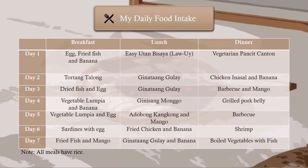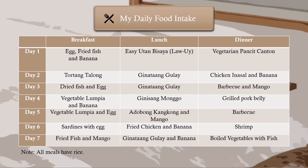My daily food intake: Day 1 — breakfast: egg, fried fish, and banana; lunch: Isiutan Bisaya or laoy; dinner: vegetarian Pasit. Day 2 — breakfast: tortang talong; lunch: ginataang gulay; dinner: chicken inasal and banana. Day 3 — breakfast: dried fish and egg; lunch: ginataang gulay; dinner: barbecue and mango. Day 4 — breakfast: vegetable lumpia and banana; lunch: ginataang munggo; dinner: grilled pork belly. Day 5 — breakfast: vegetable lumpia and egg; lunch: adobong kangkong and mango; dinner: barbecue. Day 6 — breakfast: sardines with egg; lunch: fried chicken and banana; dinner: shrimp. Day 7 — breakfast: fried fish and mango; lunch: ginataang gulay and banana; dinner: boiled vegetables with fish. Note that all meals have rice.